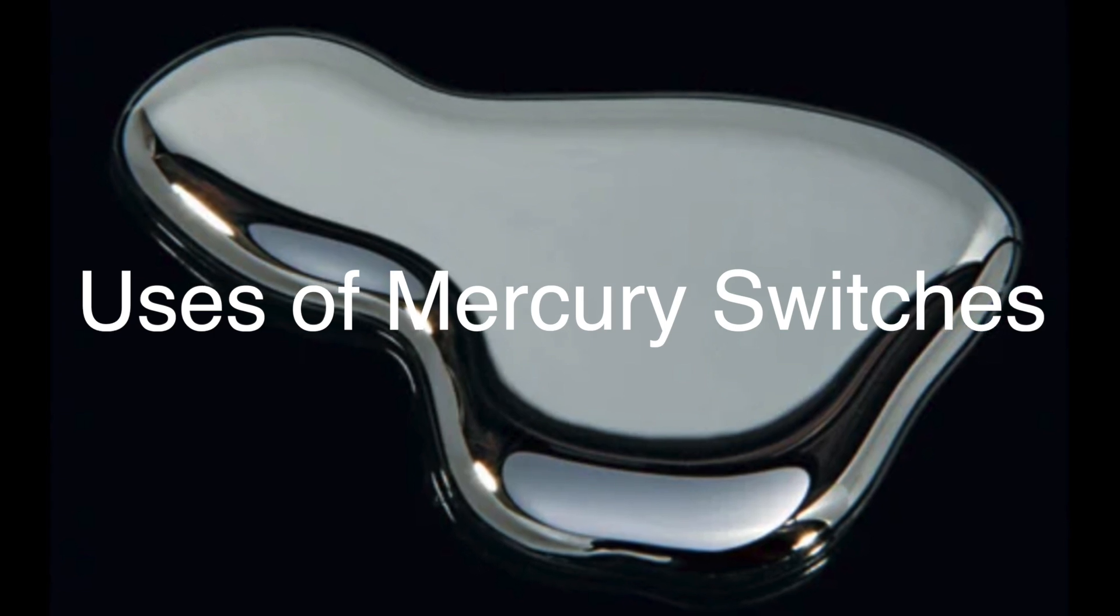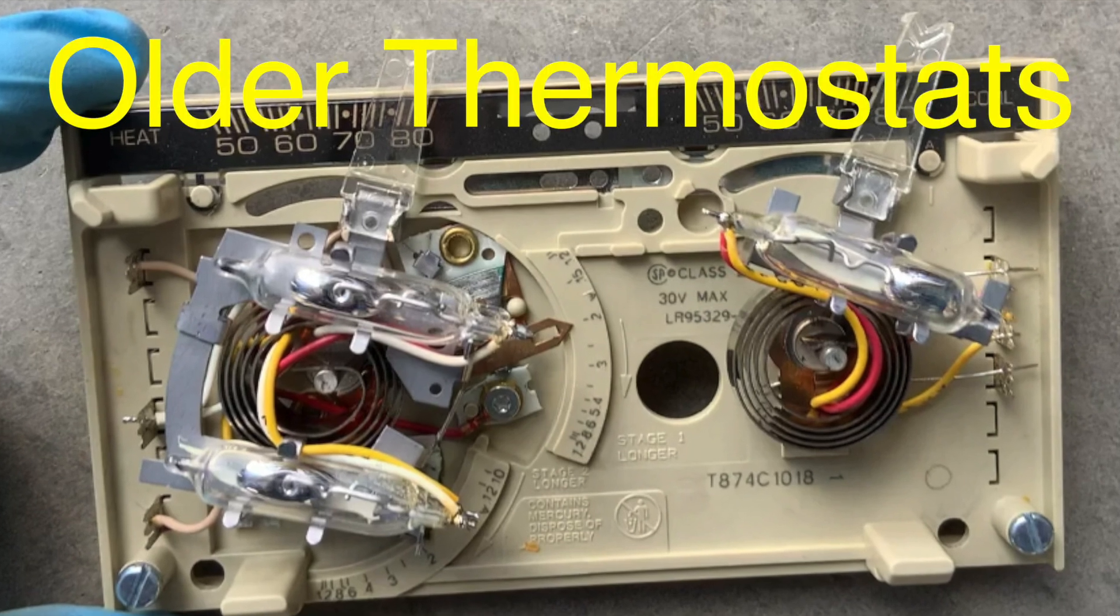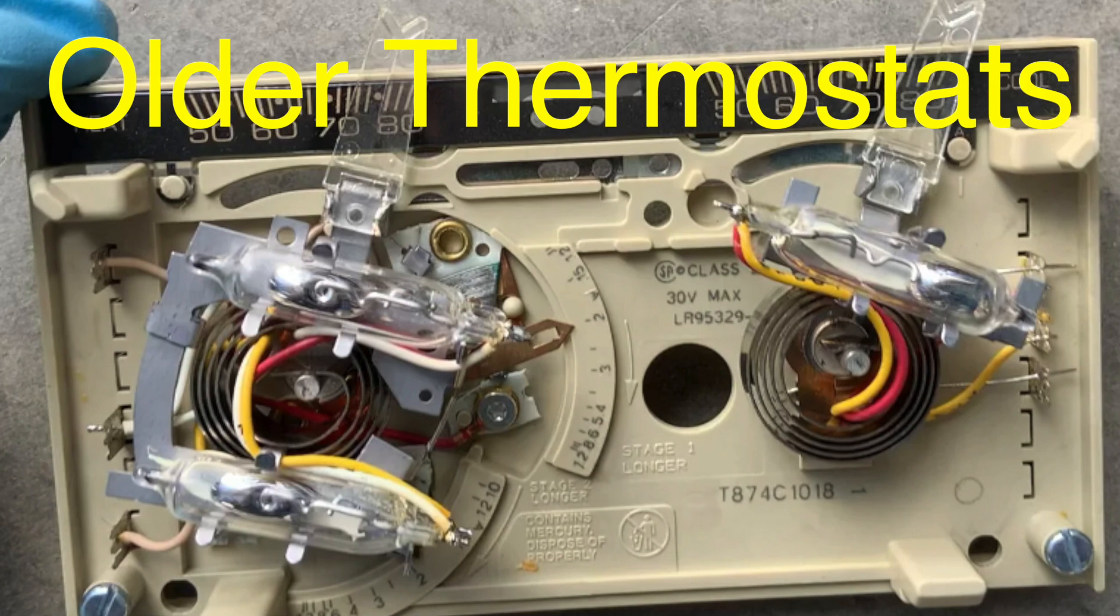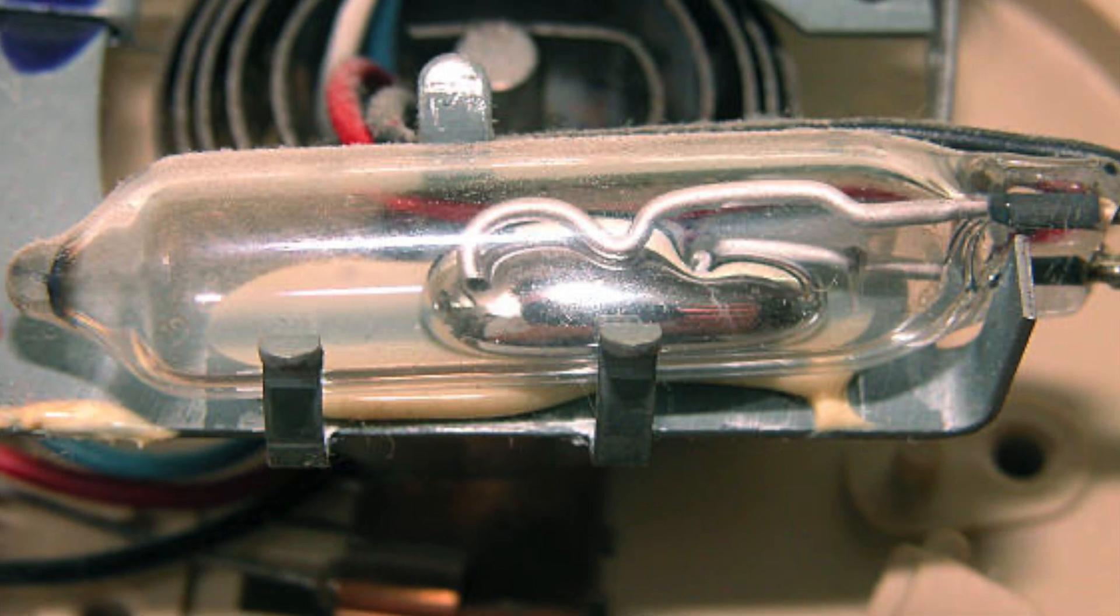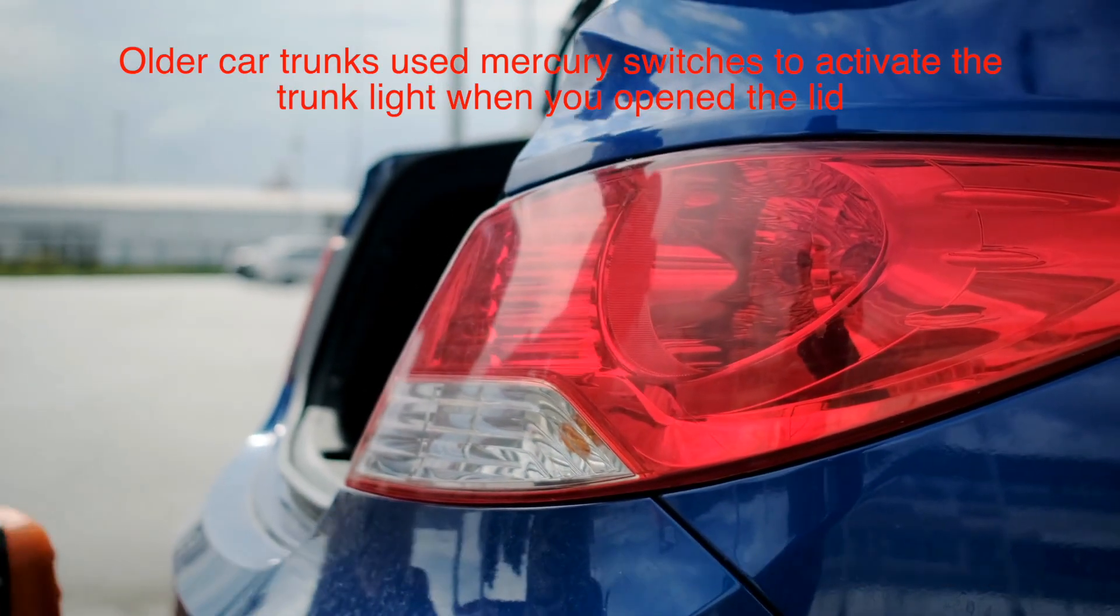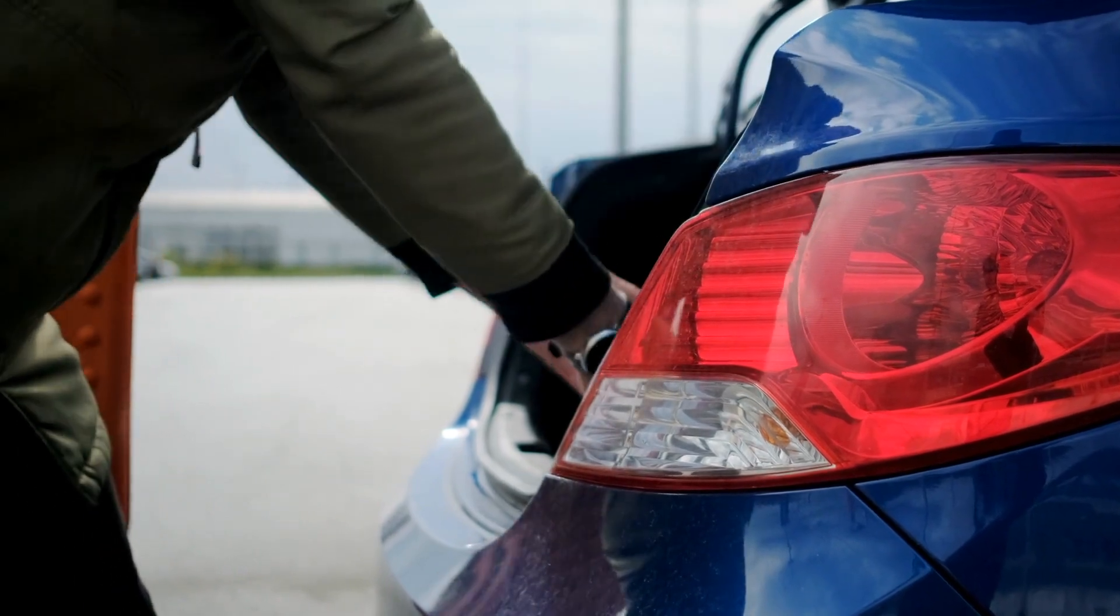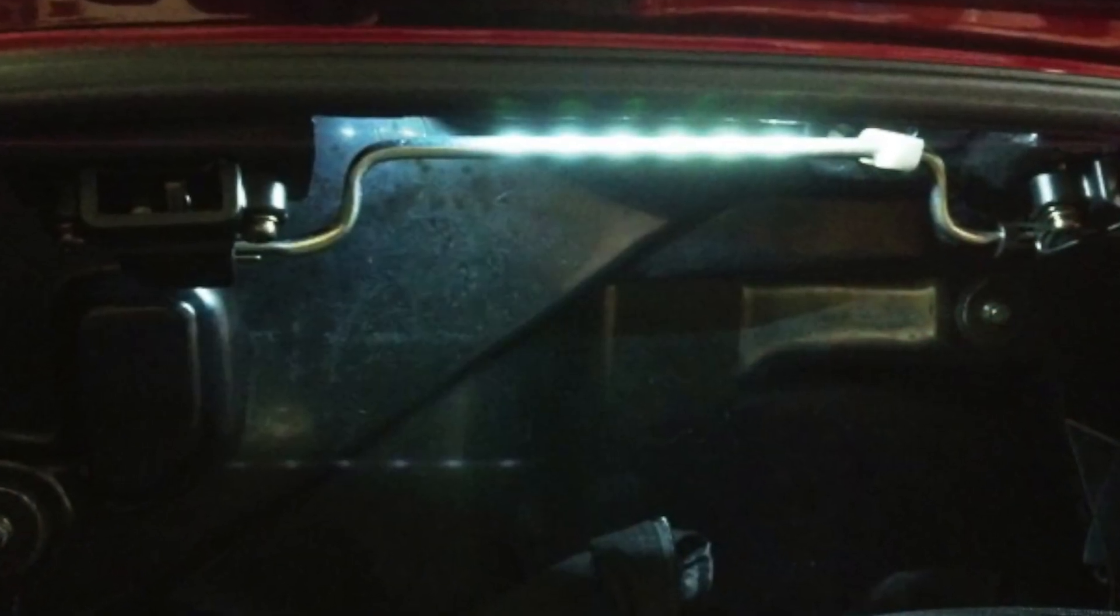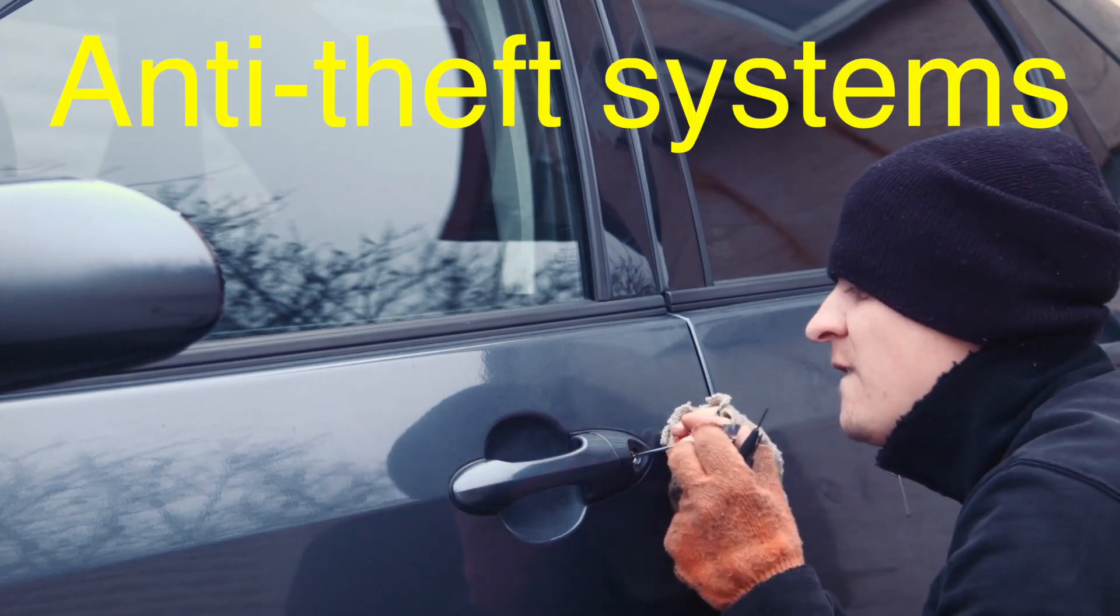So where do we see mercury switches being used? The answer might surprise you. One of the most common places you'd find them is in older thermostats, like we mentioned earlier. These switches helped control the temperature in homes and buildings for decades. Their simplicity and durability made them a go-to option for HVAC systems. Another major application was in tilt switches for safety devices. For example, older car trunks used mercury switches to activate the trunk light when you open the lid. It worked perfectly because when the trunk was tilted open, the mercury would connect the circuit and turn the light on. Close the trunk, and the circuit would break, turning the light off.